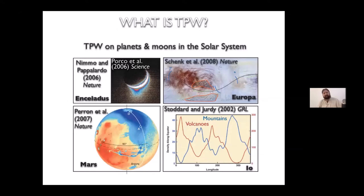We don't have to just look at Earth to see if true polar wander is a real phenomenon. Looking at the solar system, at other planets and moons, we see a lot of evidence for it. On Mars, you have the largest gravity anomaly in the entire solar system — the Tharsis Magmatic Province, a huge large igneous province — sitting squarely on the equator. There is independent evidence suggesting that Tharsis is on the equator because true polar wander rotated to put it there.